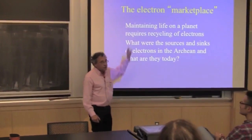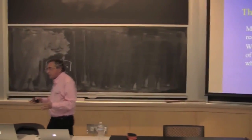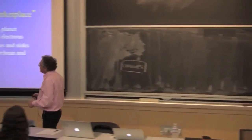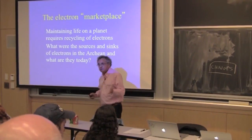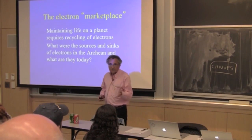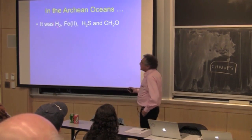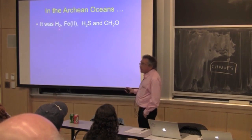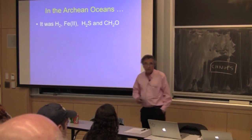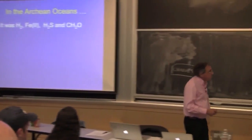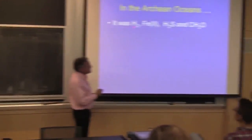Prior to the evolution of oxygen, there was life on this planet. We only got oxygen about 2.4 billion years ago. So what was the electron marketplace in the Archean — up until about 2.5 billion years ago? It was certainly, probably, originally very much based on hydrogen gas itself, which has several possible sources, one being the lithosphere.